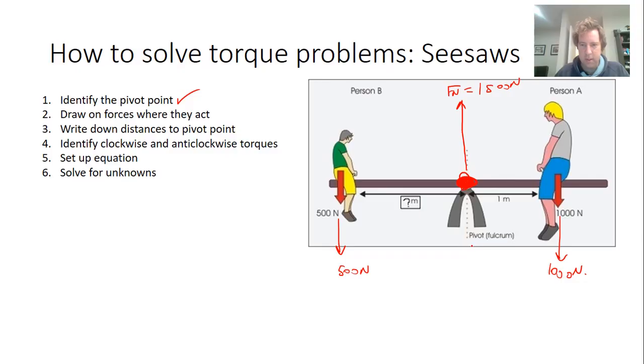Write down the distances to the pivot point. We've got this distance here is one meter. This distance here is zero meters because it's at the pivot point. And this distance here is some unknown distance.